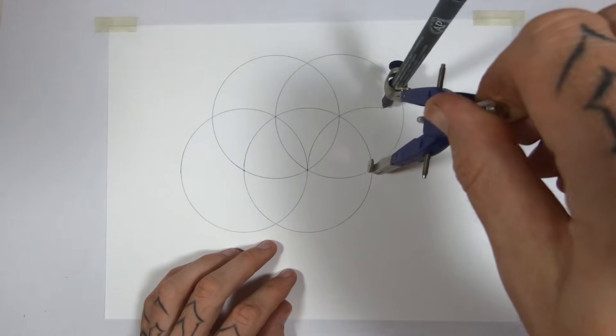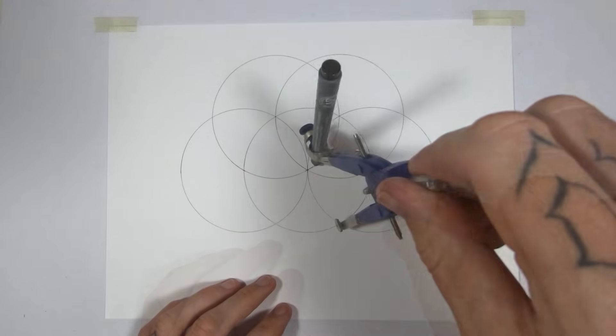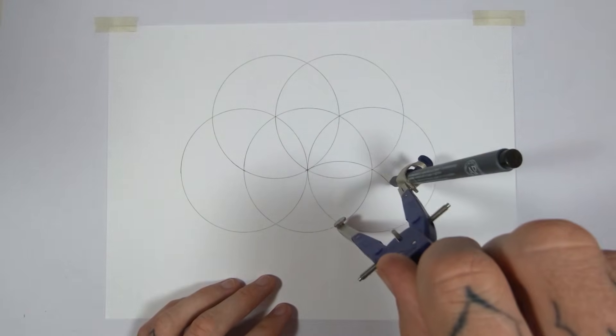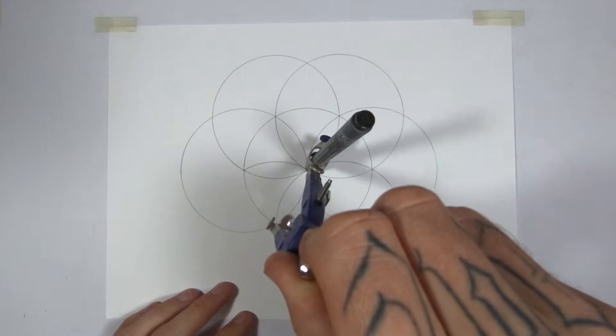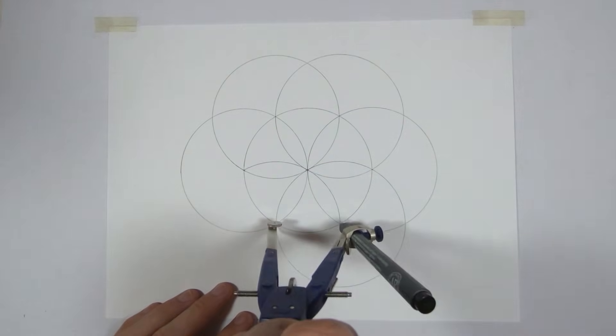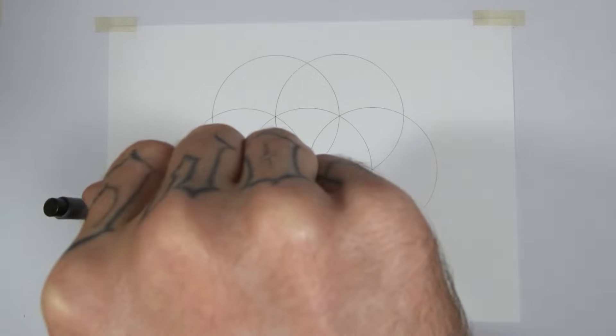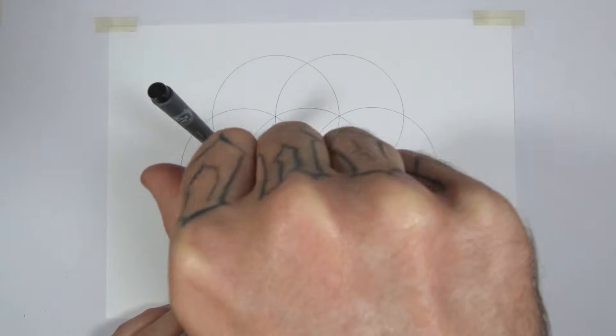So I'll keep working my way around until I've got the seed of life right in the middle of the page. And then we've got to focus on the circles on the left and the right of this seed. Those are going to be the centers of our vortexes.